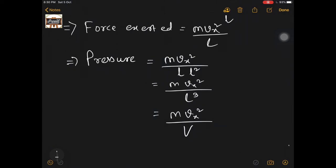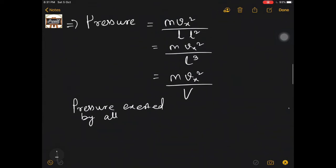L³ is nothing but the volume of the vessel. Now this is pressure exerted by one molecule. Pressure exerted by all molecules, say there are n number of molecules, is going to be m times (Vx1² + Vx2² + ... up to the nth molecule).